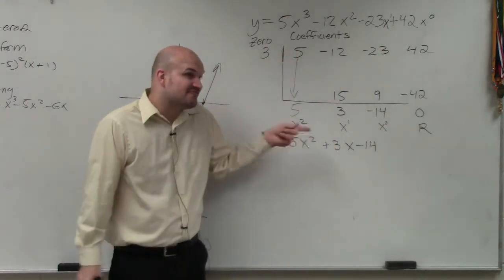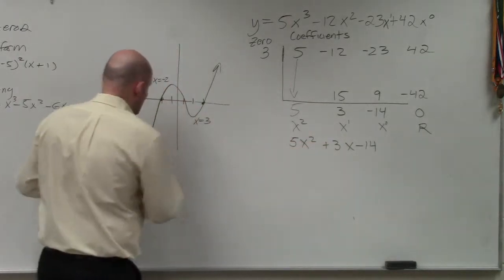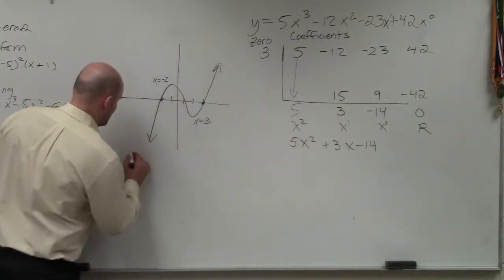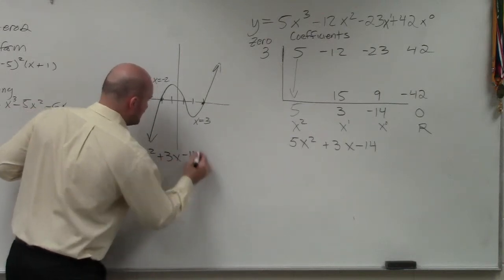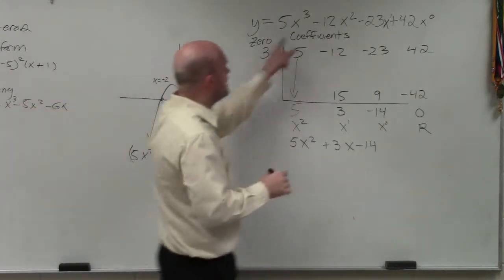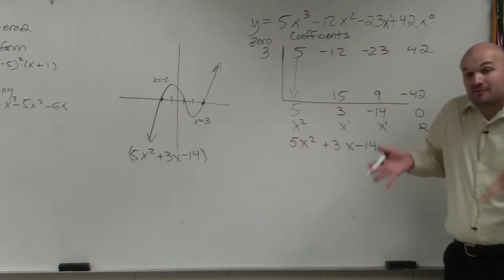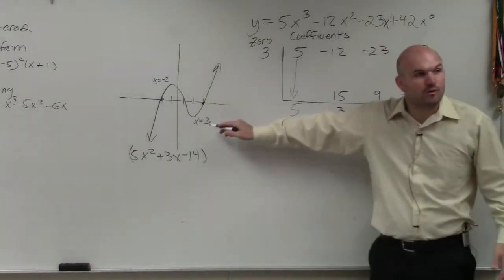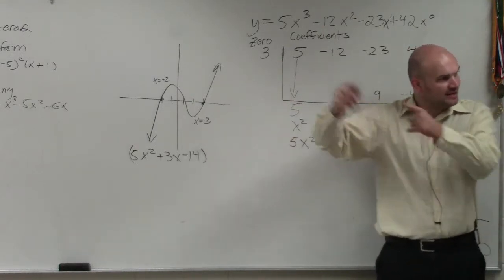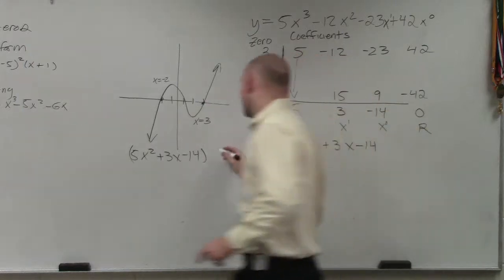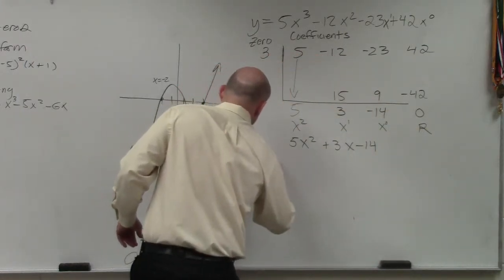So what that means is that is a factor. Going back to this format, I could say 5x squared plus 3x minus 14 — this times what gives you my original polynomial? It's not 3, though. If this is the zero, what is the factor? x minus 3. Remember how we did that writing the equation going backwards? x minus 3 — that gives you f of x.